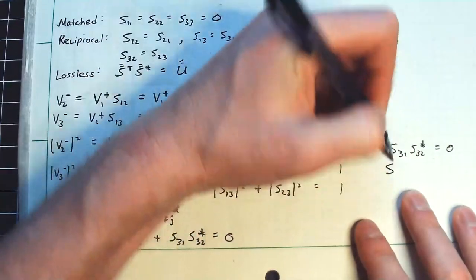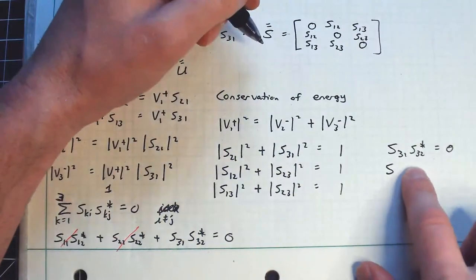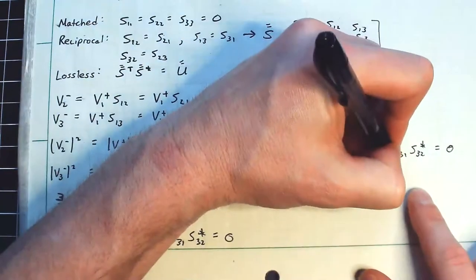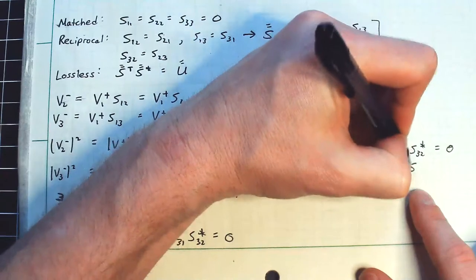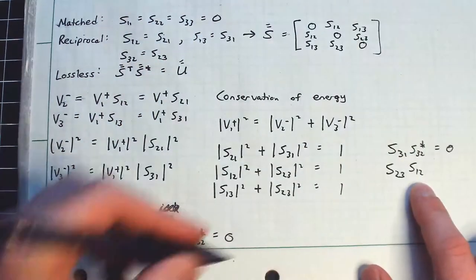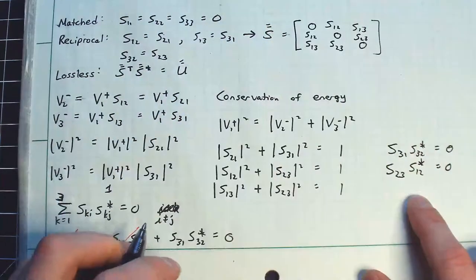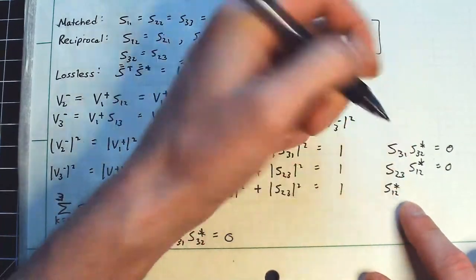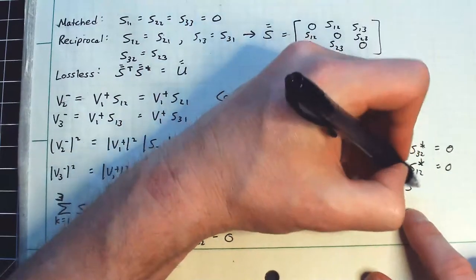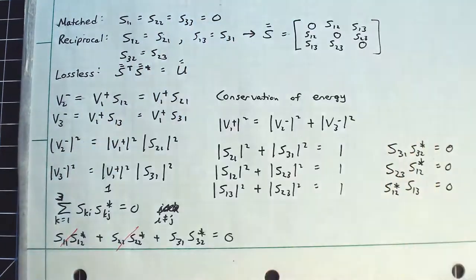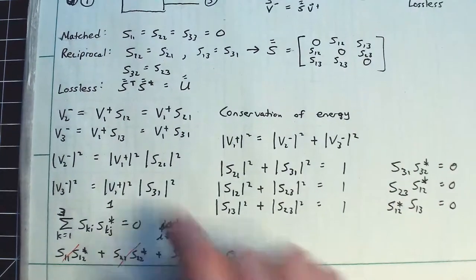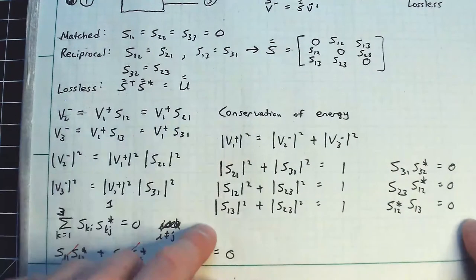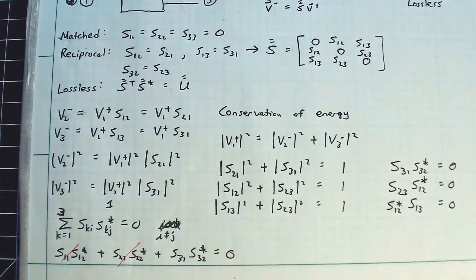So if you then repeat the same argument for the other rows of this matrix, you'll get the following. S23 times S12 conjugate is equal to zero. And then I'll get S13 conjugate is also equal to zero. So in other words, my lossless condition requires all of these things to be satisfied simultaneously.